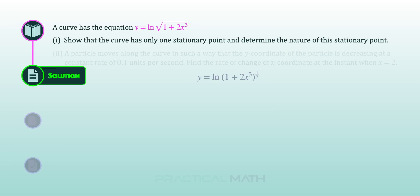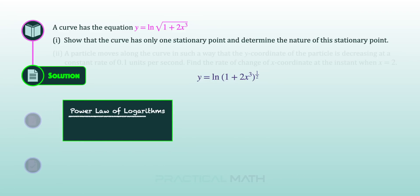We will begin by converting the square root of 1 plus 2x cubed into (1 plus 2x cubed) to the power of half, so that we are able to apply the power law of logarithms. Log x to the power of r can be written as r log x, where the exponent r is shifted to the front as a product of the log. We will now shift our exponent half to the front, giving us y equal to half ln(1 plus 2x cubed).